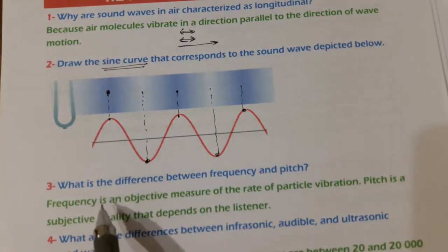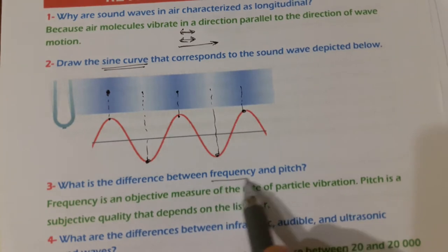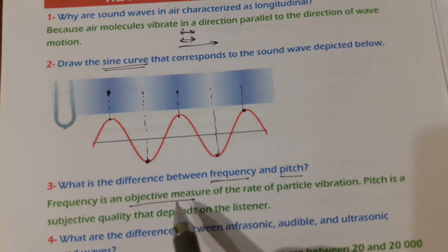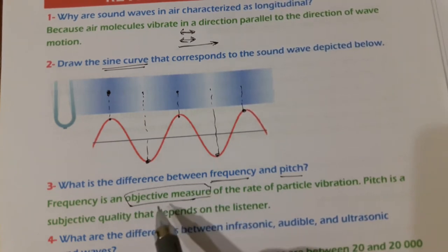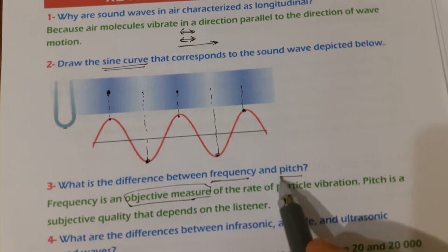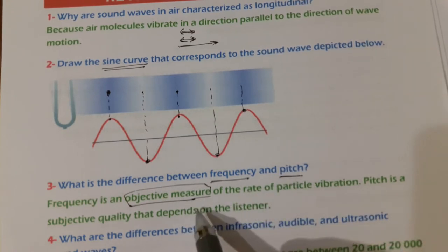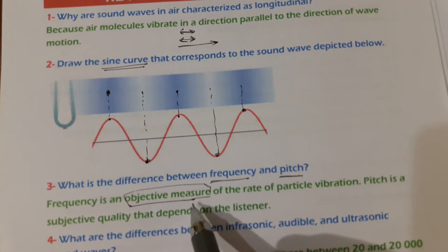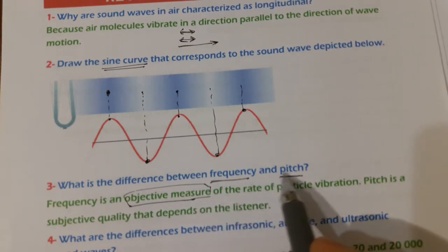Question number three: what is the difference between frequency and pitch? Frequency is an objective measure of the vibration which depends on the source only. But pitch is what we hear — what we perceive — and that's why pitch is subjective. It depends on the observer. Frequency is an objective quantity which depends on the source: how many times the source vibrates in one second is the frequency. What the listener perceives is called the pitch.